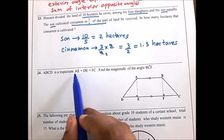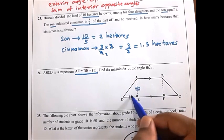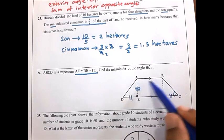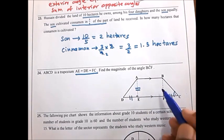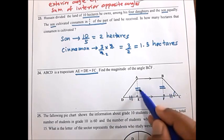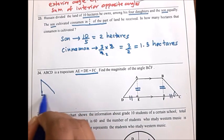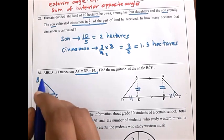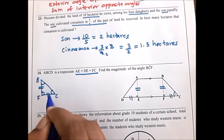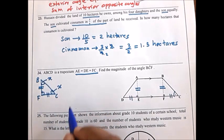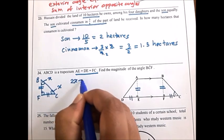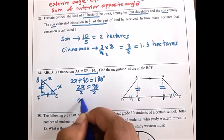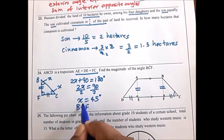Look at the 24th question: ABCD is a trapezium with three equal sides. Find the magnitude of angle BCF. You can see this is a rectangle, so opposite sides are parallel and there are right angles. Consider triangle BFC — it is an isosceles triangle with two equal sides, so opposite angles are equal. Take both base angles as x. Sum of interior angles is 180: 2x plus 90 equals 180; subtract 90; 2x equals 90; divide by 2; x equals 45. Therefore angle BCF equals 45 degrees.